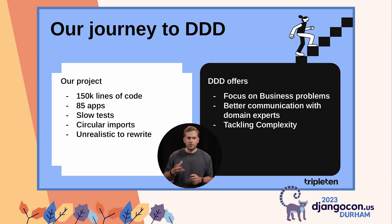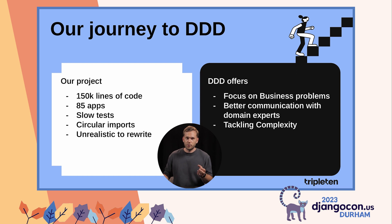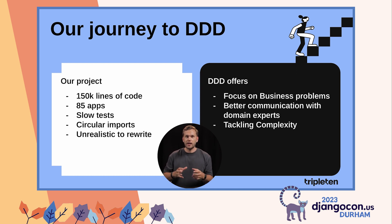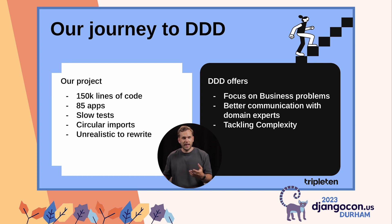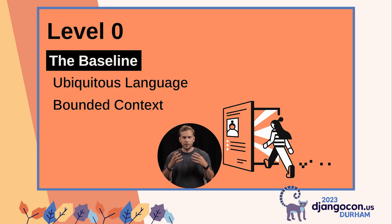Therefore, we decided to transform our big ball of mud monolith to a modular monolith — just to split the project into modules following the separation of concerns principle. But we did not know how to start. DDD proposed some ideas that sounded interesting to us. DDD promotes conversation with business experts, which aligns with Scrum, which we also use. We had already chosen to move away from software analysts because creating detailed requirements is challenging, if not impossible, and this often results in late consultations with experts. Tackling complexity is in the name of the original Eric Evans blue book, and it is what we really needed.